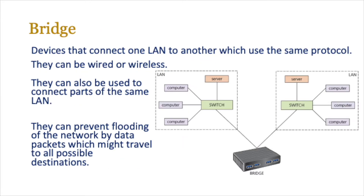A bridge is another device commonly used in a network. These devices connect one local area network to another — often networks which use the same language or the same protocol — and they can be both wired or wireless. They can also be used to connect parts of the same local area network, so you don't need another device outside the network. It might be that you have two rooms controlled by switches, and between both rooms you've got a bridge that allows them to communicate with each other. If you walk around school, you'll probably see these somewhere, connecting to other switches as part of the network.